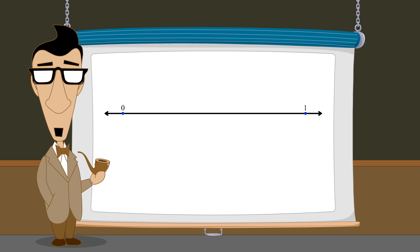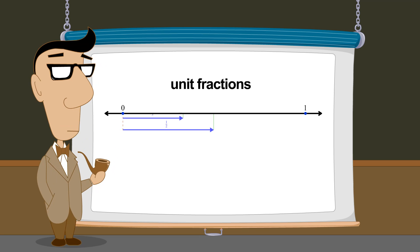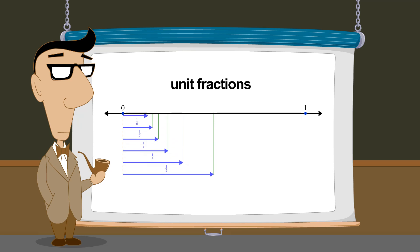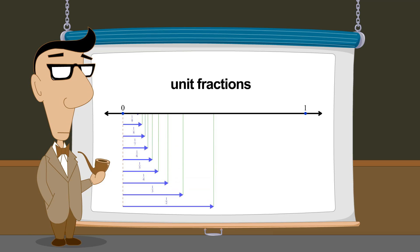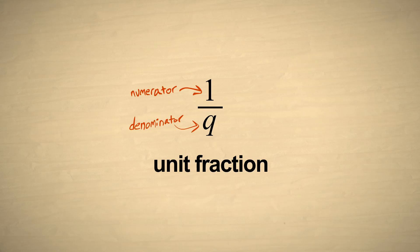At first, the only type of fractions used were unit fractions: one-half, one-third, one-fourth, and so on. The denominator of a unit fraction, which we will represent by the letter q, can be any natural number, but the numerator must be one.